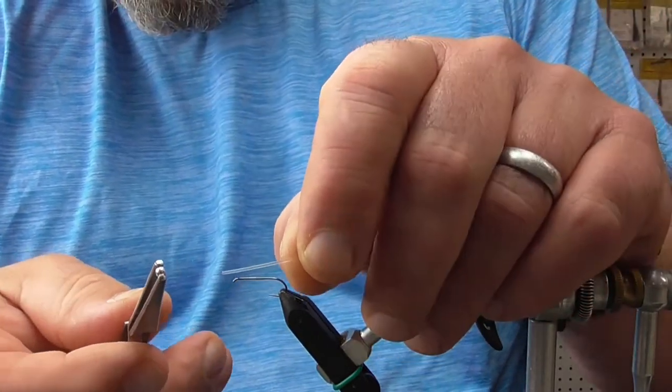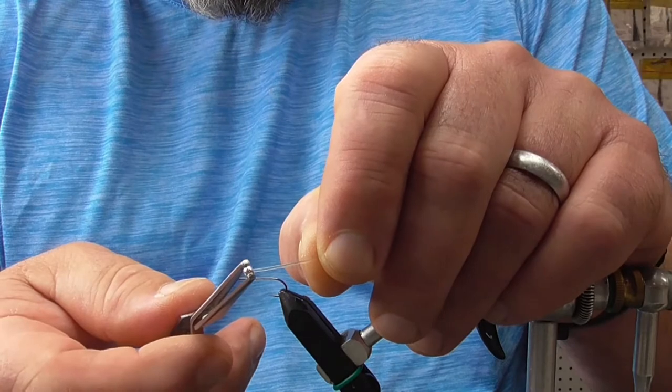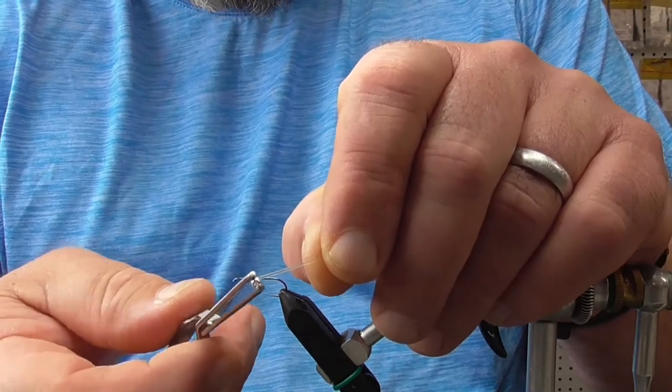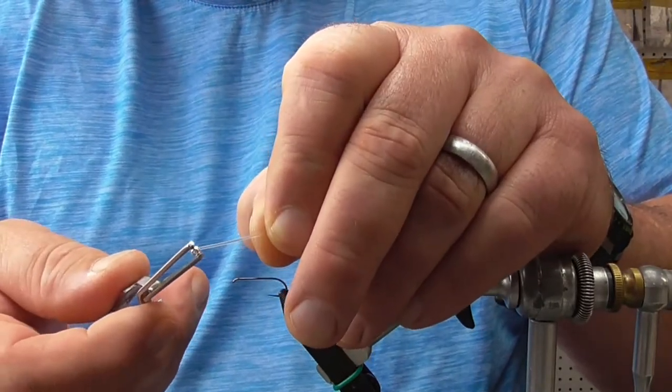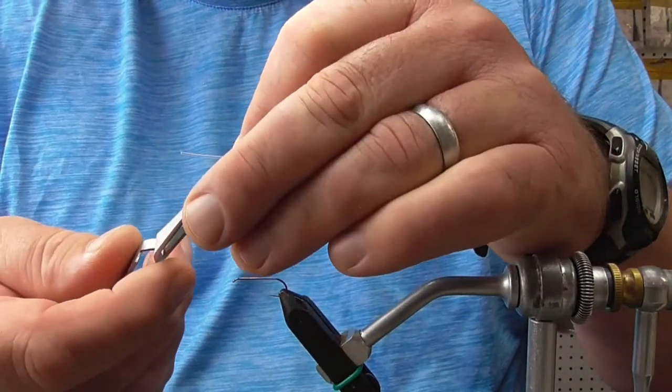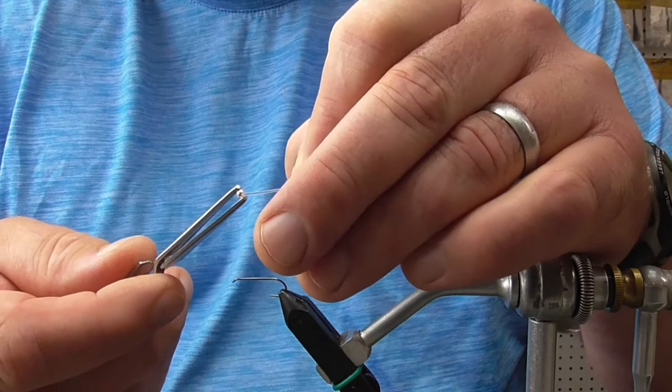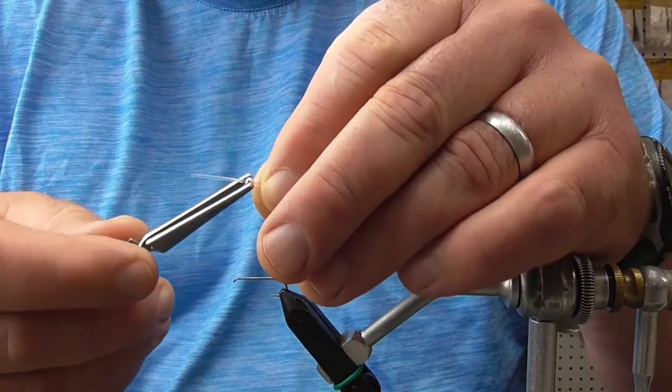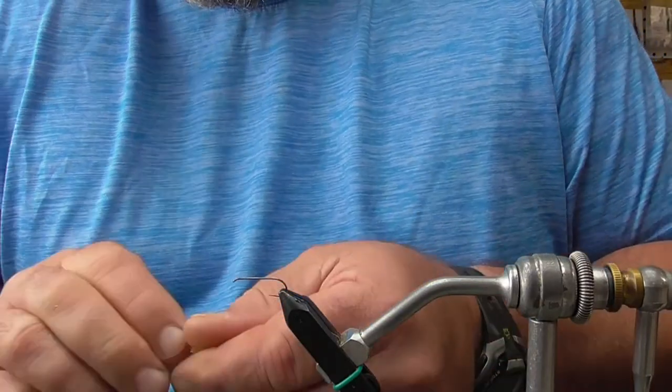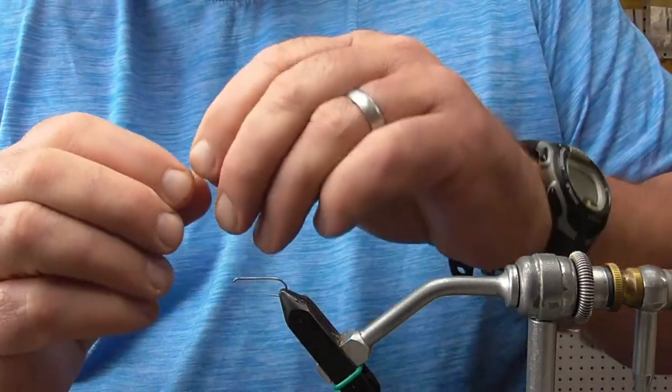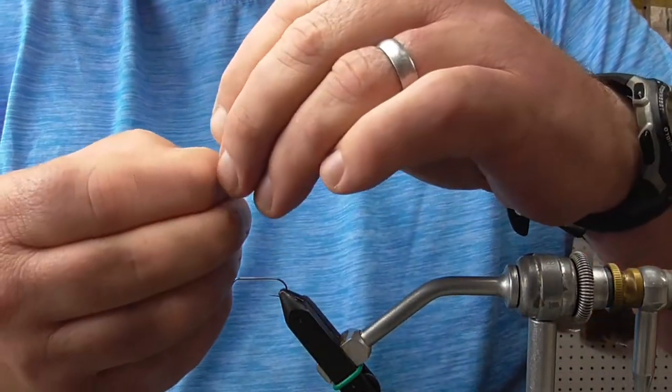I'm going to put that through the monofilament, and I'm actually going to go what we would call backwards, in that I'm taking the monofilament through the larger end and having the end that normally would go through the hook point...